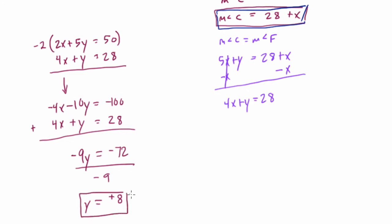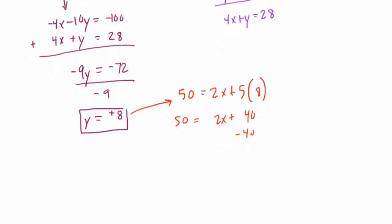And we can plug that back in to find the value of x. We know, if we use any equation here, I'll use this one right here. 50 equals 2 times x plus 5 times 8. 5 times 8 is 40. 2x plus 40 equals 50. Subtract 40 from both sides. Let's scroll down here. And 2x equals 10. Divide both sides by 2. And x equals 5.